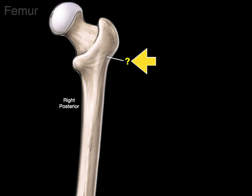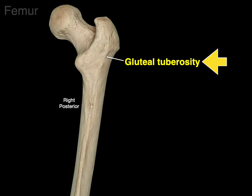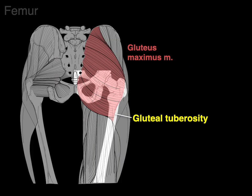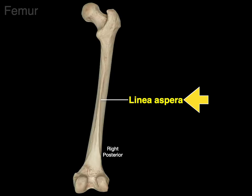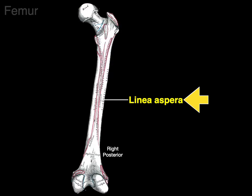We have this bony swelling where the gluteus maximus attaches — we call it the gluteal tuberosity. There is a photograph where you can see it much more clearly on the back, with the gluteus maximus superimposed on the gluteal tuberosity. The rest of the maximus goes to the IT band. Then we have this line along the back of the femur called the linea aspera, meaning 'rough line.' That's where attachments for the adductor longus, brevis, and magnus, the vastus lateralis, vastus medialis, and the short head of the biceps femoris occur.